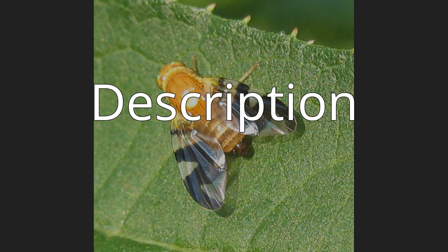Cross-vein BM-Cu is present. The cell cup, posterior cubital cell or anal cell, is closed and nearly always narrowing to an acute angle. It is closed by a geniculated vein in CuA2. The CuA2 vein is rarely straight or convex. The tibiae lack a dorsal preapical bristle. The female has an oviscape. The larva is amphineustic, having only the anterior and posterior pairs of spiracles.